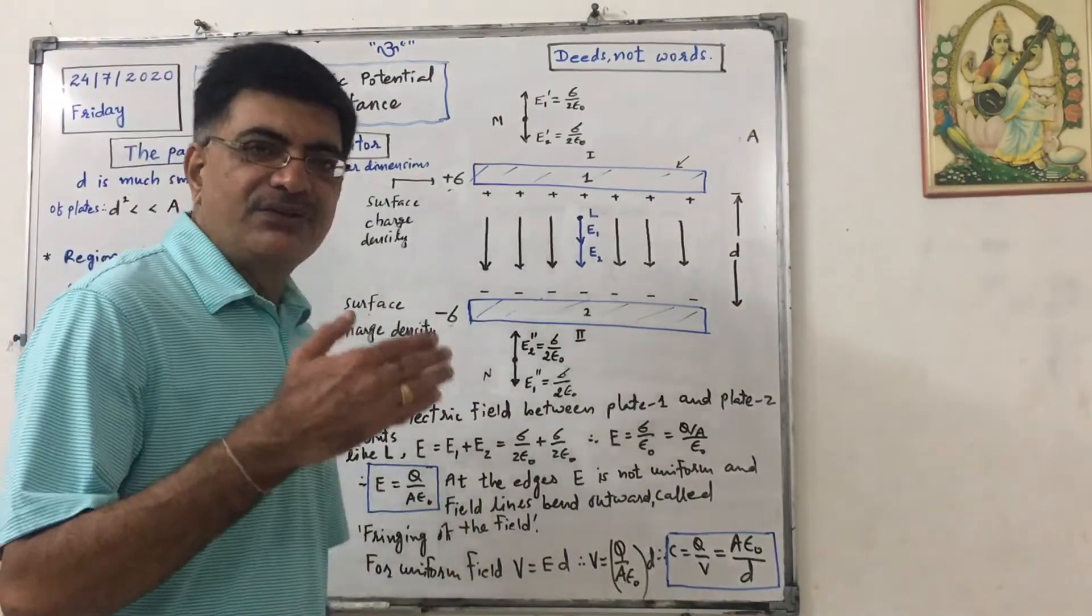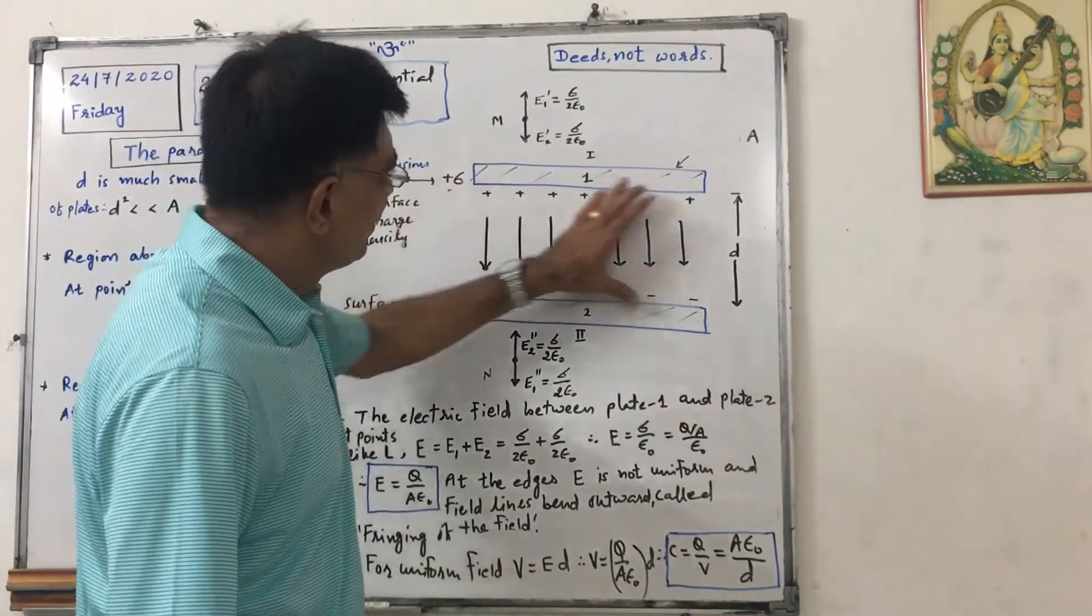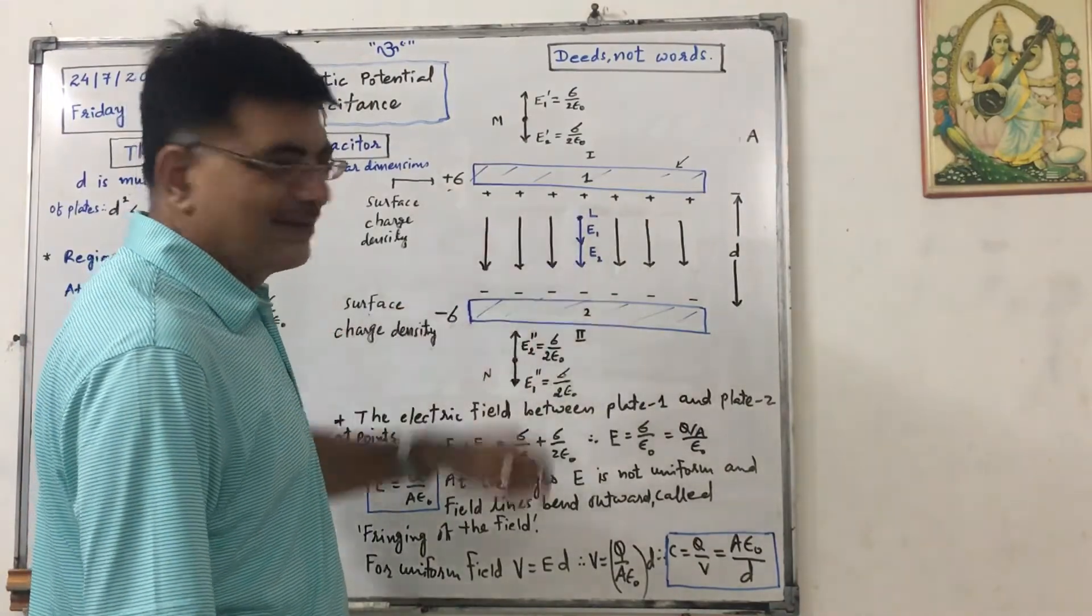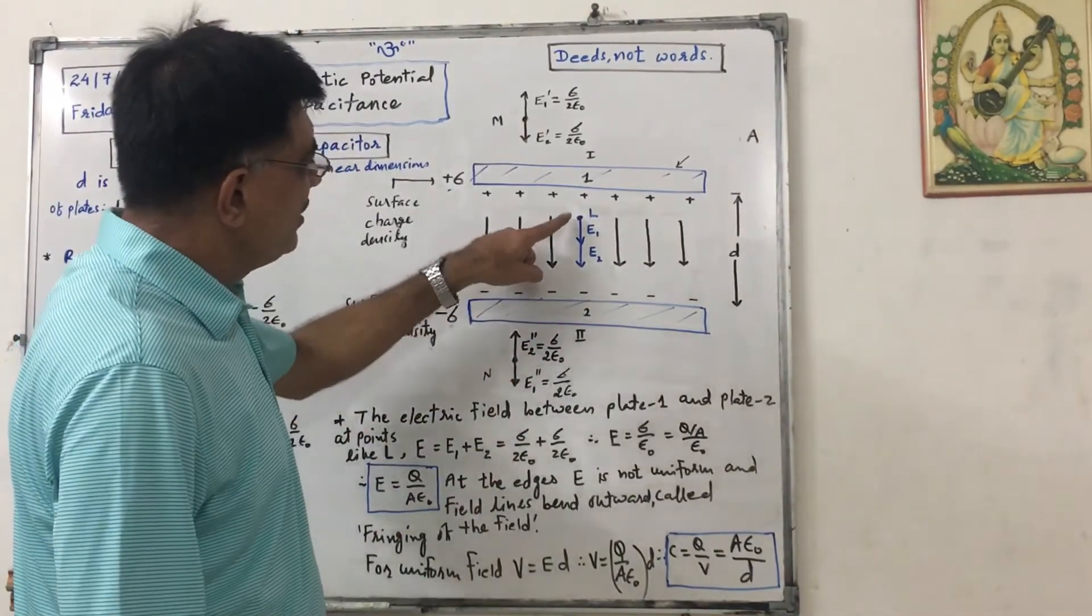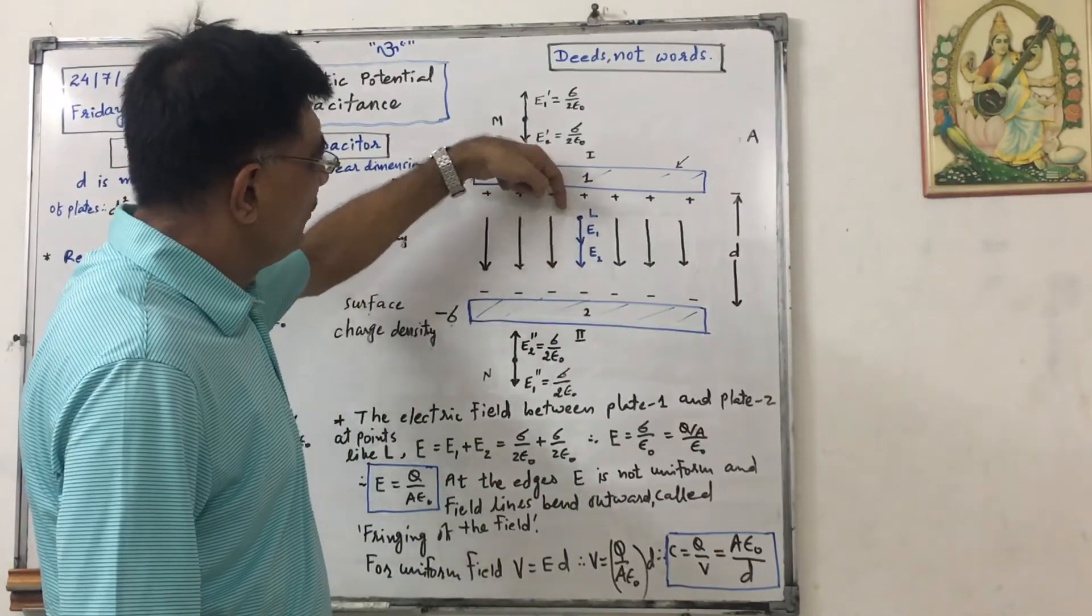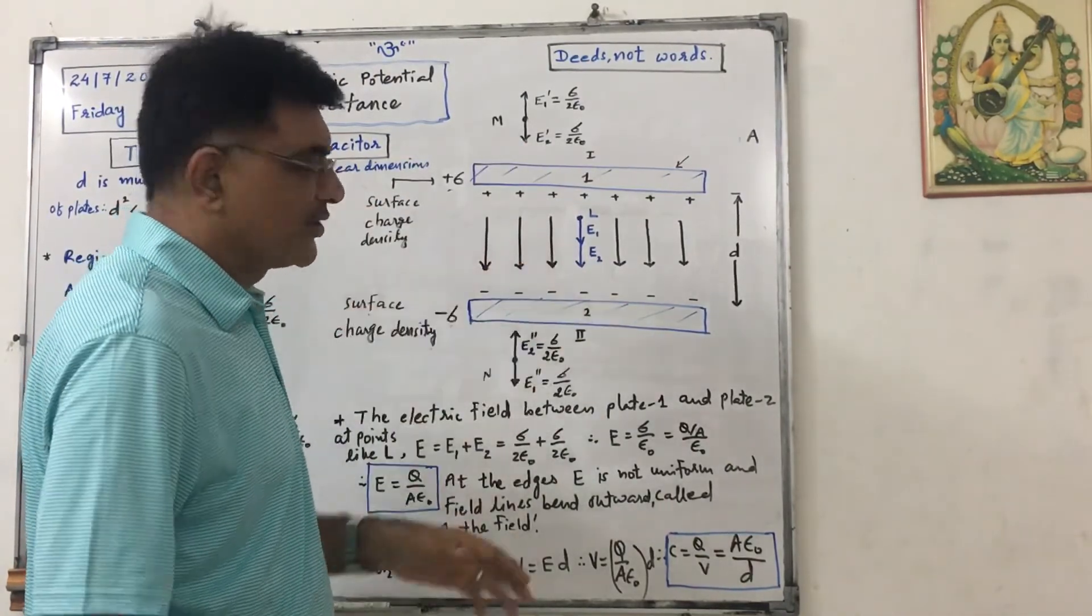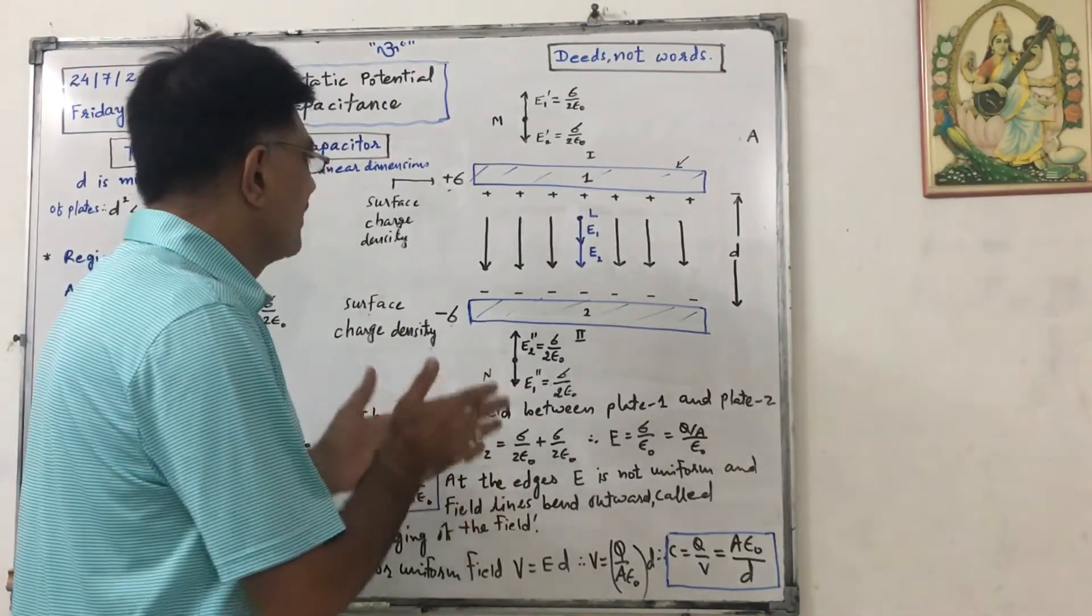Now, if I consider any point in this region, like L, and if I consider unit positive charge here, this plate will offer repulsive force. This plate will offer attractive force. So net field will be sum of these two.